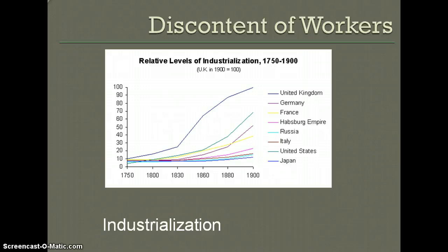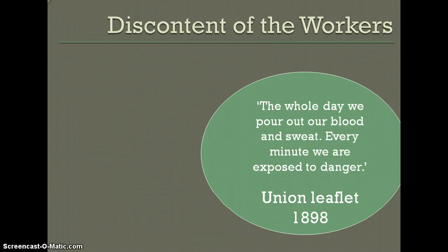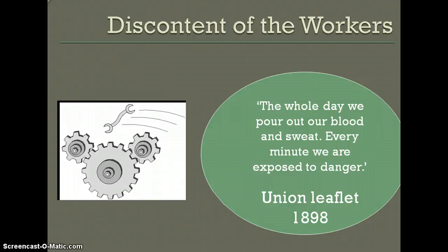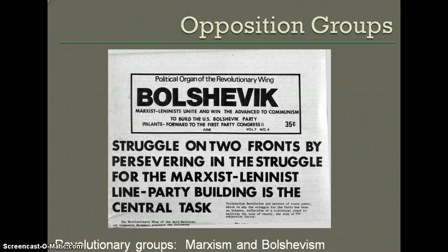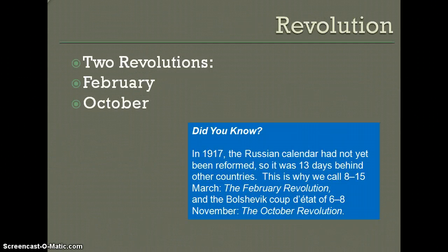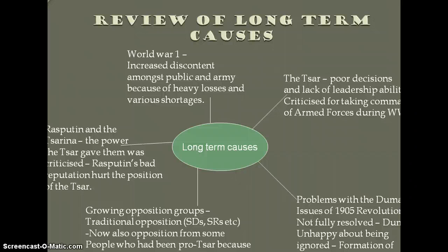A union leaflet from 1898 captures a worker saying: 'The whole day we pour out our blood and sweat. Every minute we are exposed to danger.' The discontent of the workers, the discontent of the peasants, the poor leadership of the Tsar, and the undue influence of Rasputin all came together to start a revolution. Another factor was the creation of opposition and revolutionary groups, two of the most important being the Marxists and the Bolsheviks, who would be led by Vladimir Lenin. Summing up: increased public and army discontent, the Tsar's poor decisions in the war, and the growing opposition of the Bolsheviks and Marxists all contributed.